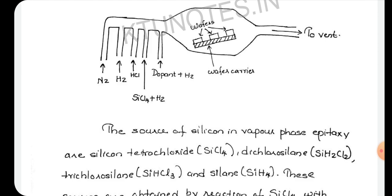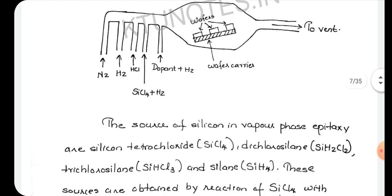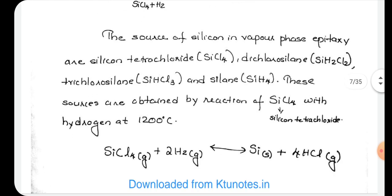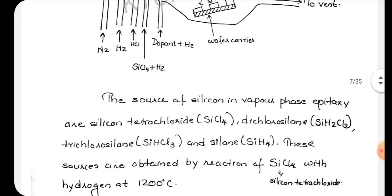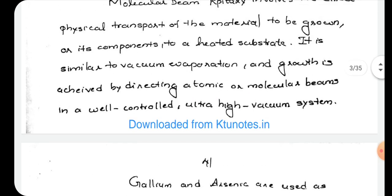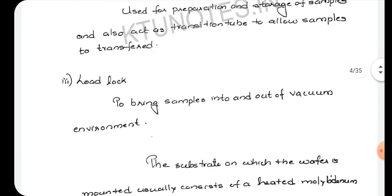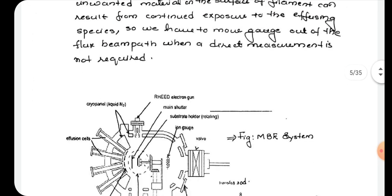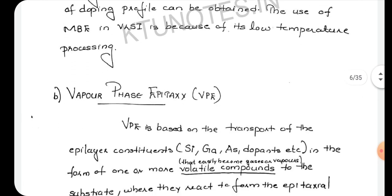The source of silicon in vapor phase epitaxy is silicon tetrachloride, SiCl4. Silicon tetrachloride reacts with hydrogen in the reaction: SiCl4 + 2H2 → Si + 4HCl.